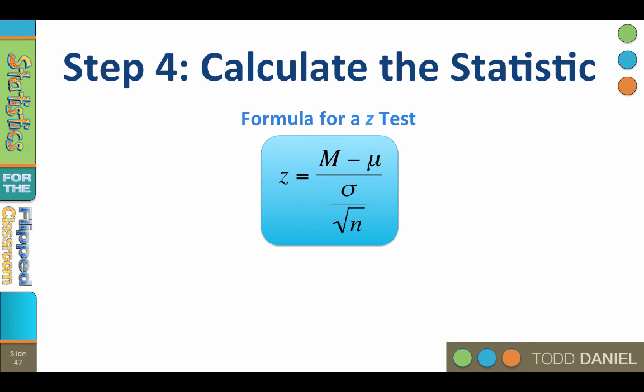We will begin with the formula for a z-test. This formula looks very similar to the formula that we used for calculating a z-score, except for the denominator. For reasons that I explained in the video about the central limit theorem, the denominator will be the standard deviation of the population divided by the square root of n. This is called the standard error of the mean.